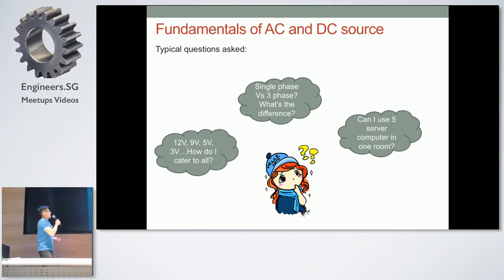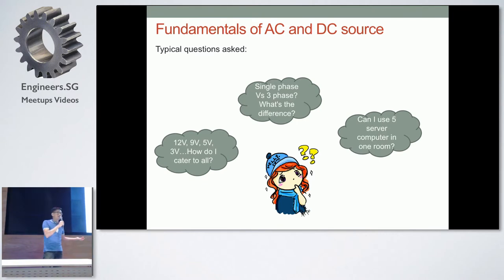Basically, these are the kind of questions I've been asked so far in terms of my job scope. Can I hook up five server computers? Can I have six hair dryers blowing at the same time? What is single phase versus three phase? What's the difference? Why are there so many voltage values? What can I do to cater to all?